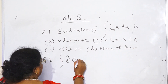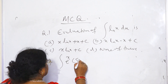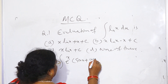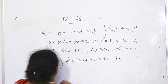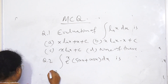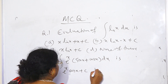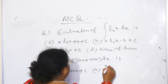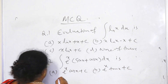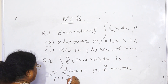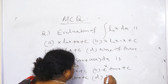Question number 2: Integration of e to the power x times (sin x plus cos x) with respect to x. A: e^x·cos x plus c. B: tan x plus c. C: e^x·sin x plus c. D: none of these.